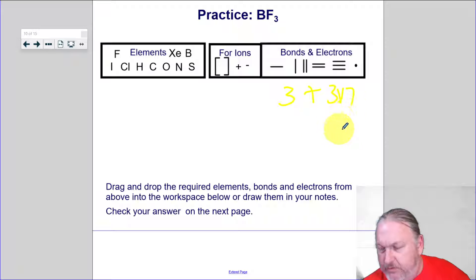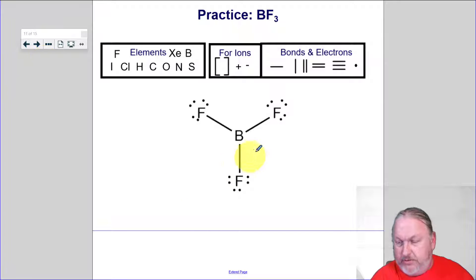Three plus three times seven. Seven, seven, seven, that's going to be 24 electrons. Boron's in the middle, least electronegative. One, two, three. Draw those around. Fluorine, fluorine, fluorine. Add your dots. Dot, dot, dot, dot, dot, dot, dot. And then you've got eight, sixteen, twenty-four. So that's going to be our Lewis dot structure for boron trifluoride.